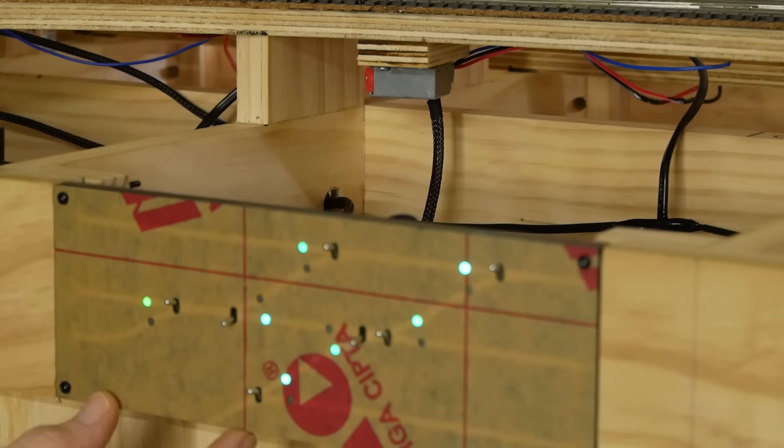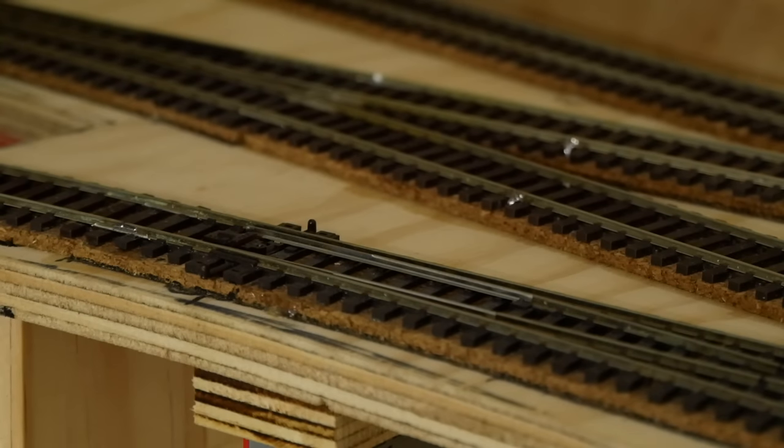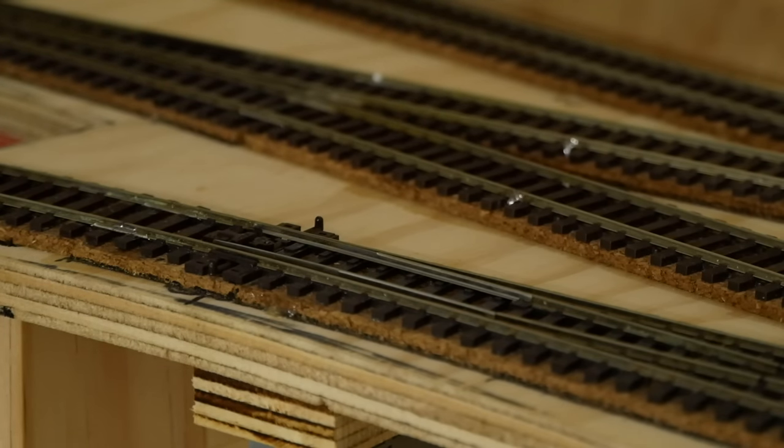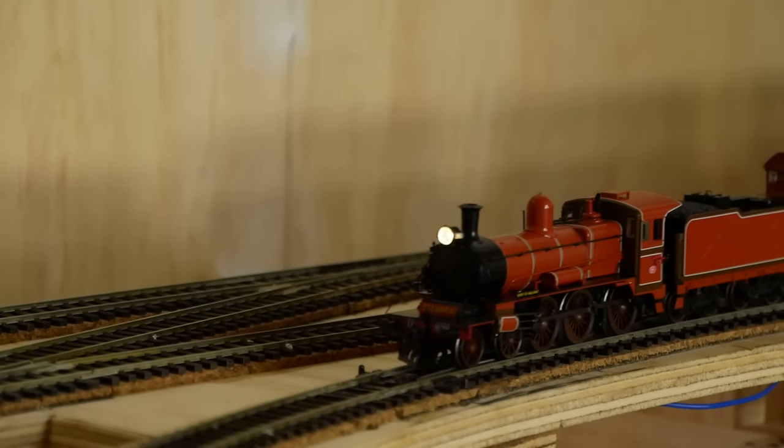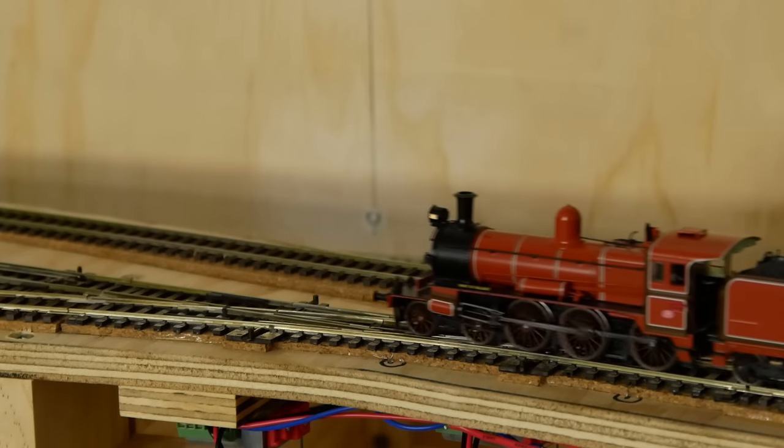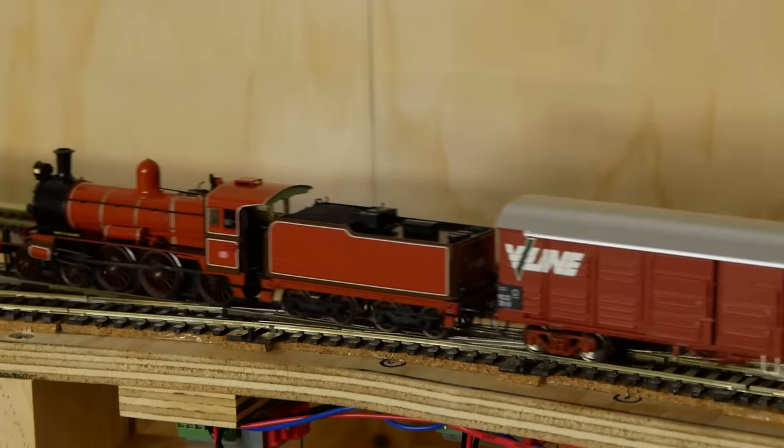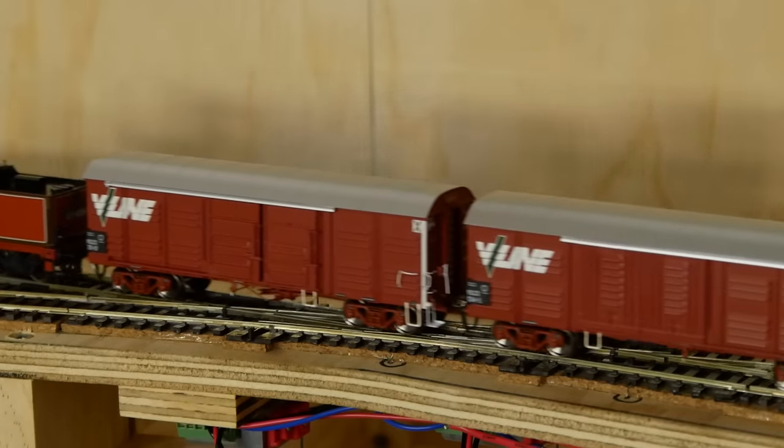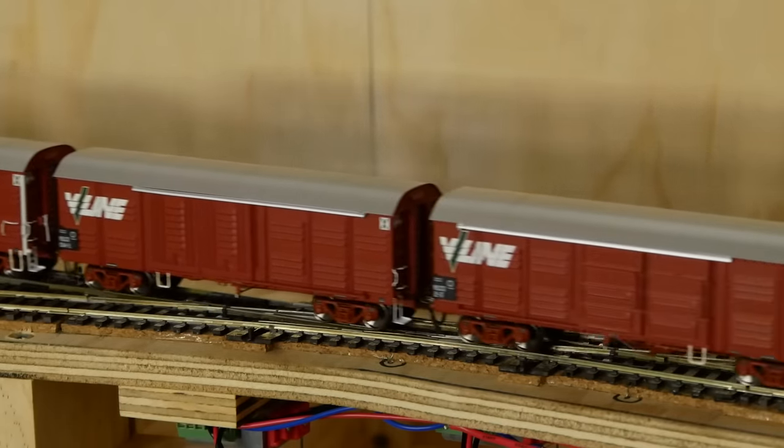And so far it's running beautifully. The train isn't faulting which means all the feeder wires are doing their job. All the switches are working as they should and the polarity of the frogs are correct. If they weren't I would get a short and the train would stop. Although it would be quite an easy fix just by reversing the wires on the switch machine.